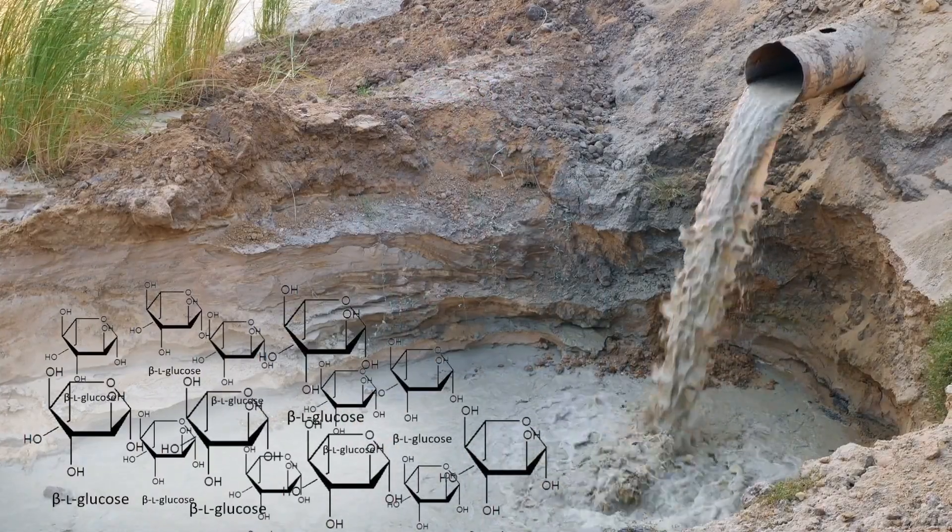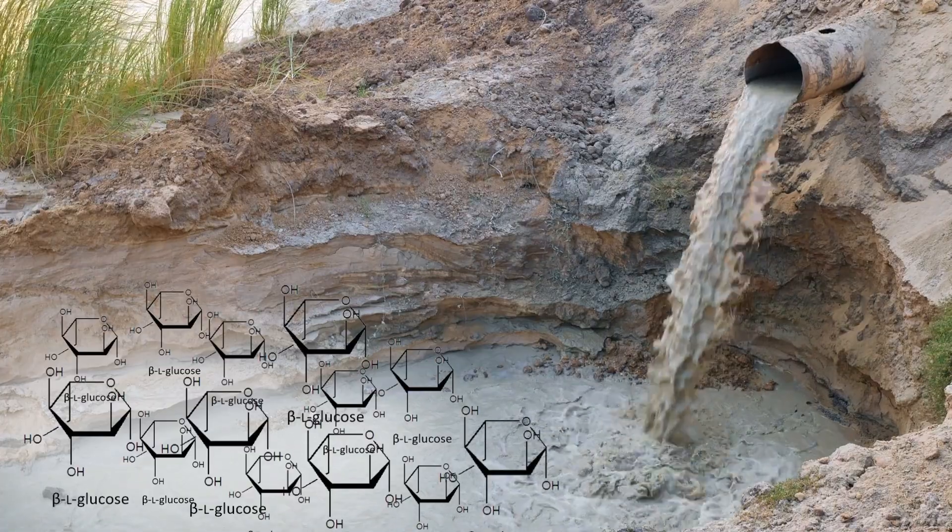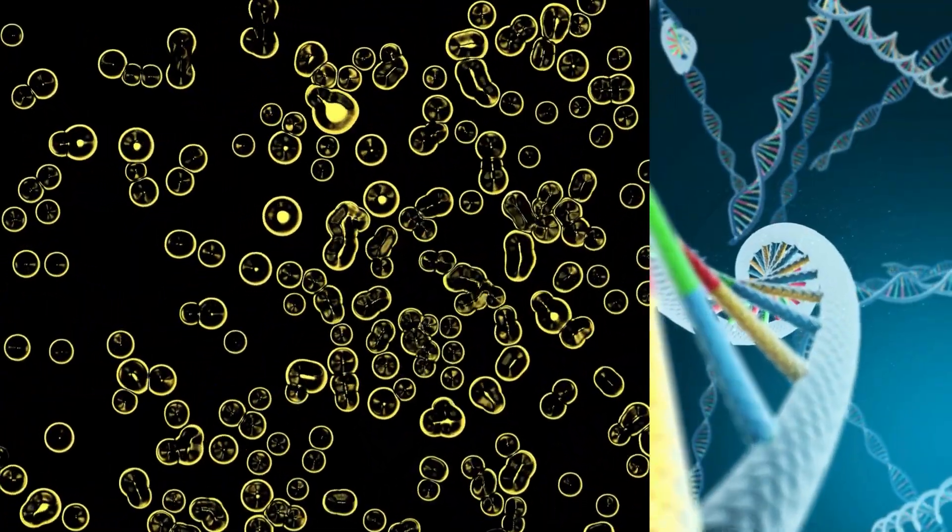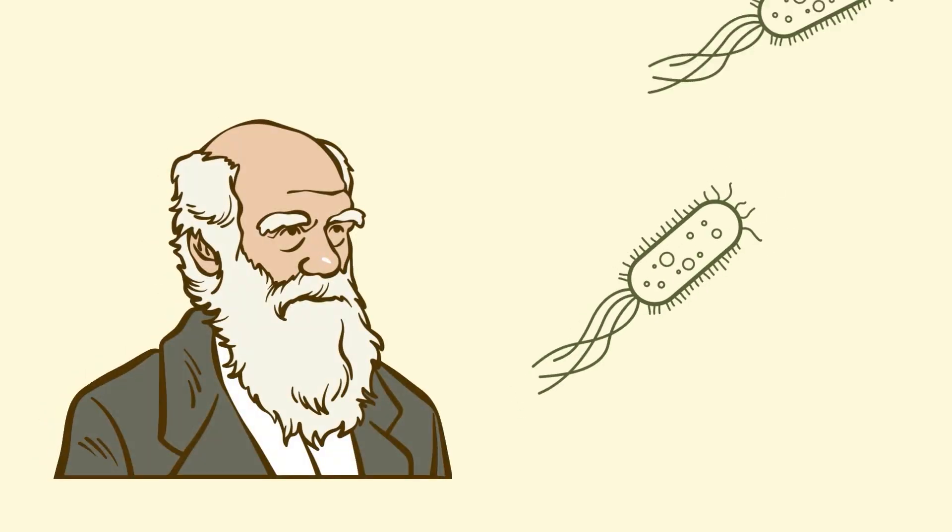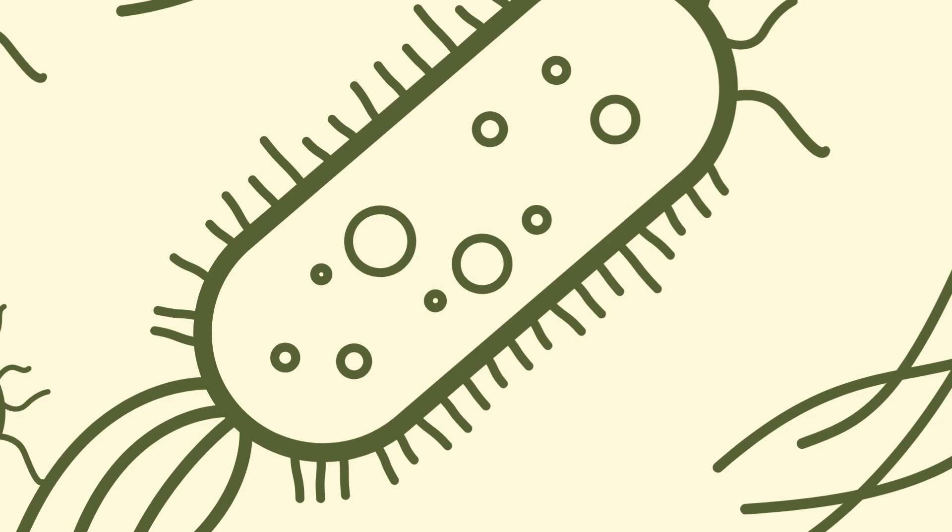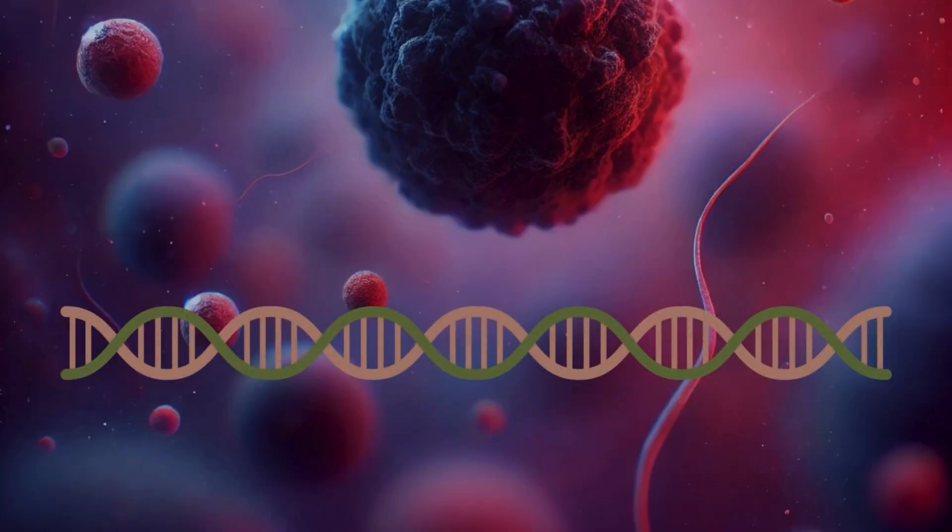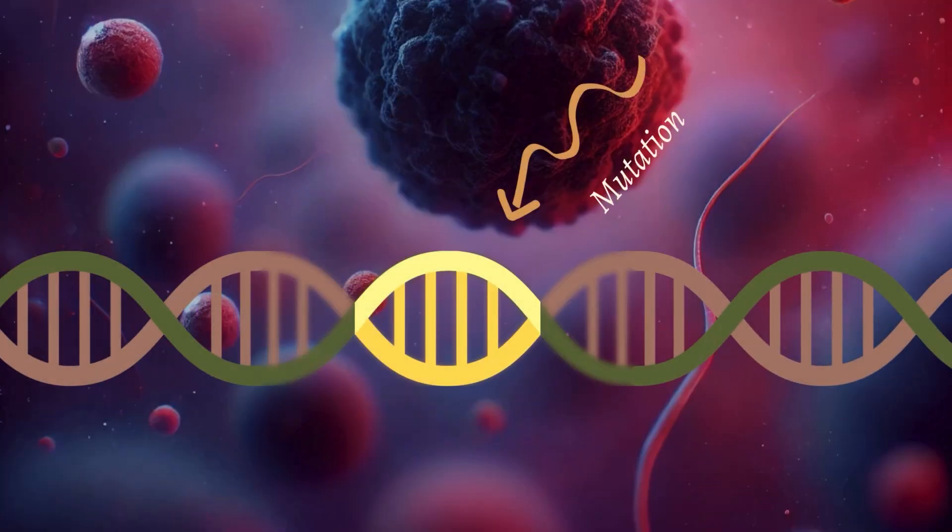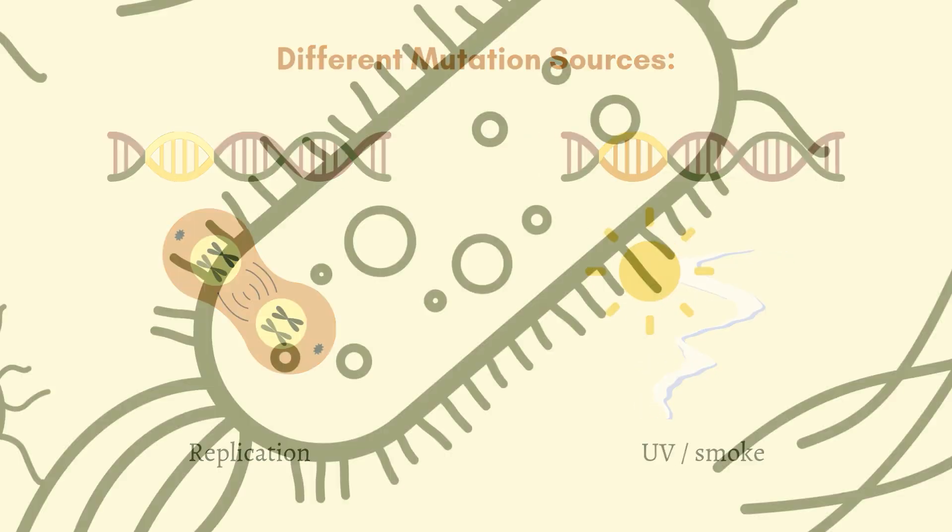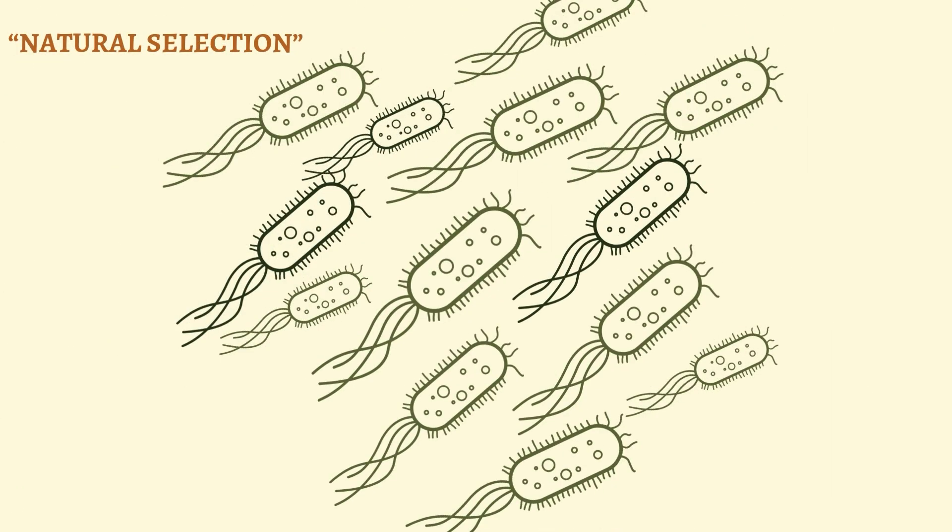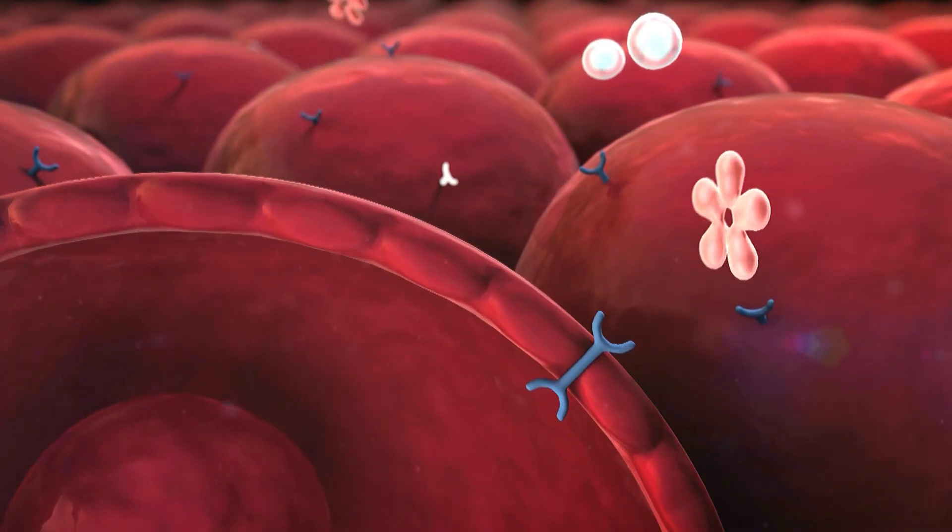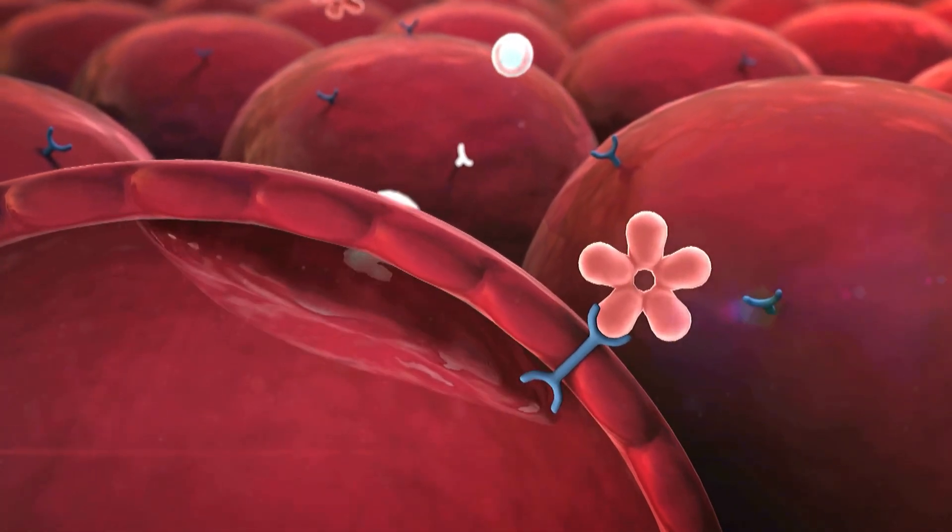Over time, this could lead to an accumulation of L-Sugars in the environment, as most organisms currently lack the enzymes to break them down. This surplus could trigger an evolutionary race among microorganisms to develop the ability to metabolize L-Sugars. Microbes that randomly mutate to produce enzymes capable of processing L-Sugars would have a significant survival advantage, feasting on this abundant energy source. This could lead to the emergence of new bacterial strains or even entirely new metabolic pathways in existing species.